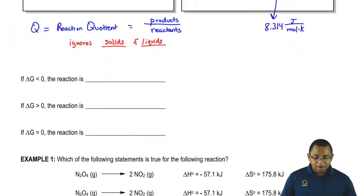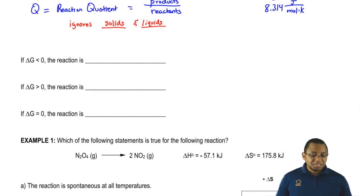We're going to say here, if delta G under non-standard conditions is less than zero, then our reaction is spontaneous. If it's greater than zero, then it's non-spontaneous. If it's equal to zero, then our reaction is at equilibrium.